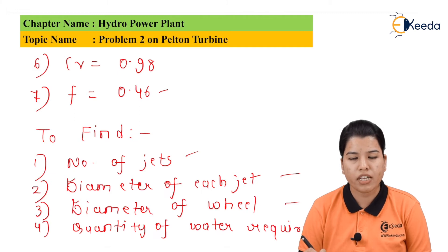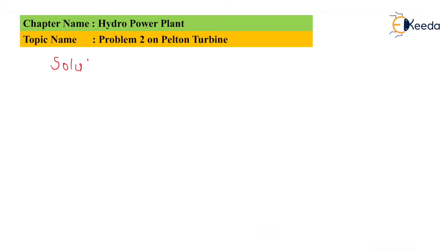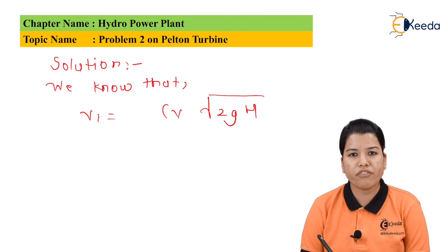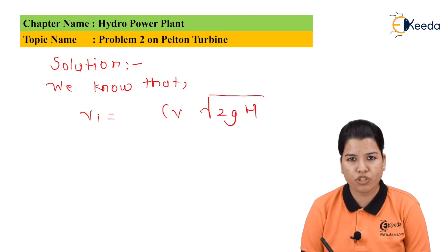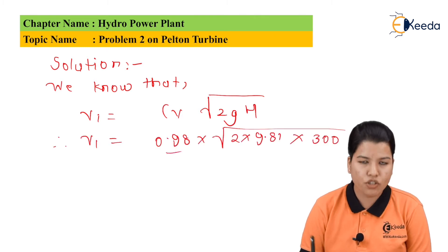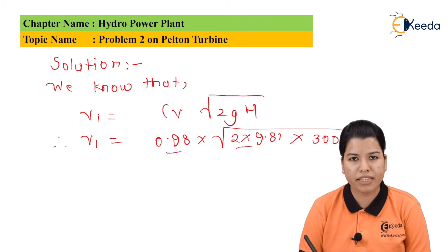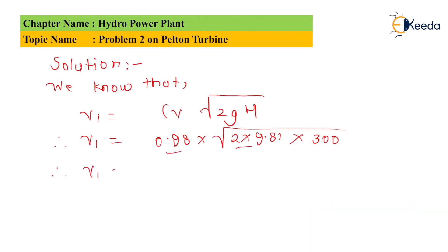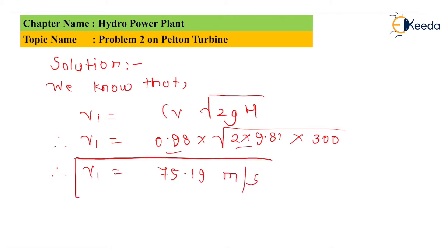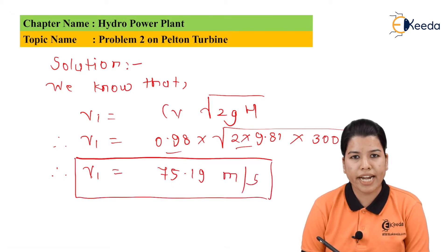Let us find the solution to this problem. The formula for V1 can be written as V1 is equal to Cv multiplied by the square root of 2gH. Substituting the values, V1 is equal to 0.98 multiplied by the square root of 2 multiplied by 9.81 multiplied by 300. After solving, we get V1 equal to 75.19 meter per second.